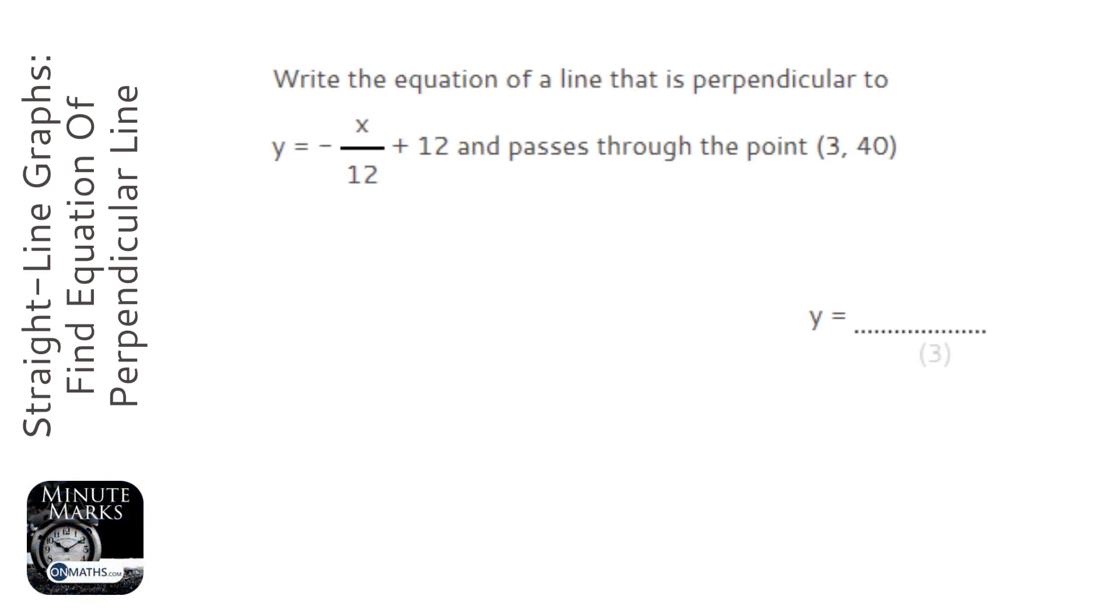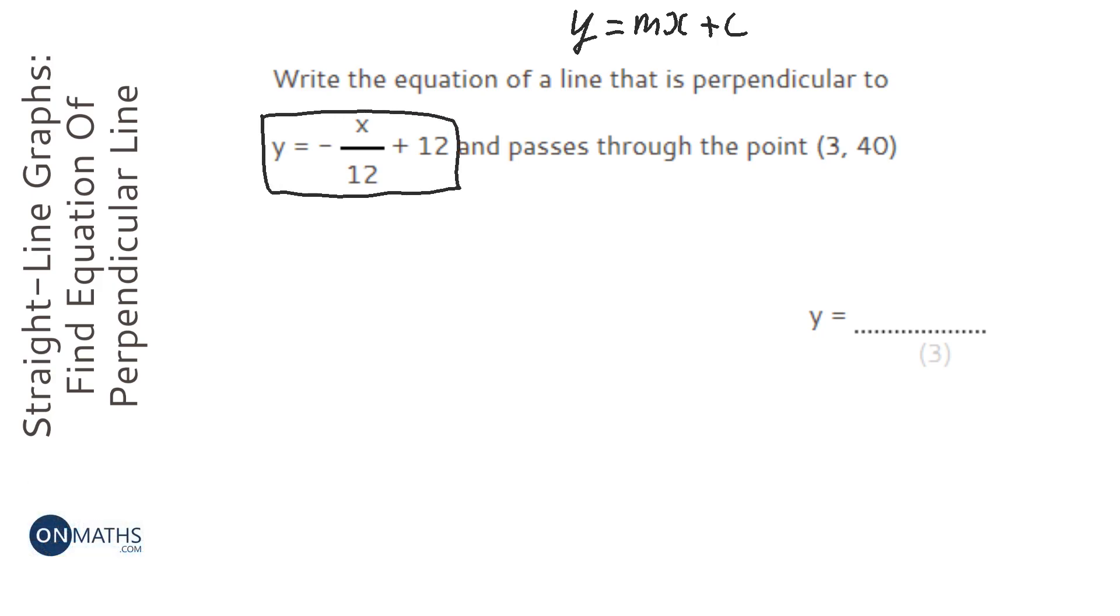Okay, so for this equation it's useful to remember the formula y equals mx plus c, with m being the gradient and c being the y-intercept. We're told that we have a line that's perpendicular to this line here, and it passes through the point when x is 3, y is 40.